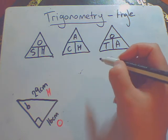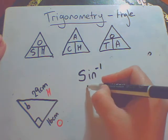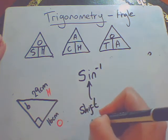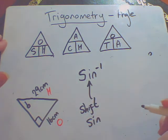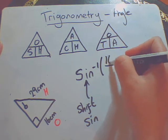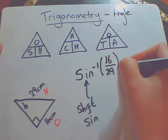So again, just like with the cos triangle we just did, we're going to use sin minus 1. Remember, you get to that by pressing shift and then sin on your calculator. And inside the brackets is where our fraction goes, the opposite divided by the hypotenuse.